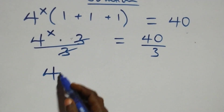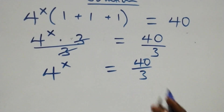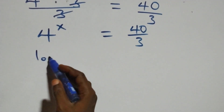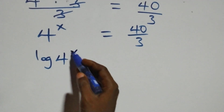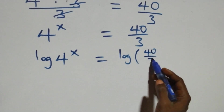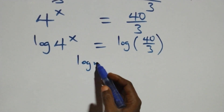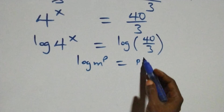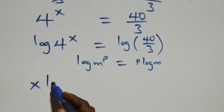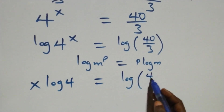We are left with 4 raised to power x equals to 40 over 3. The next step, we take the log on both sides: log 4 raised to power x equals to log 40 over 3. We apply the power law of logarithm: log m raised to power p is the same as p log m. This becomes x log 4 equals to log 40 over 3.